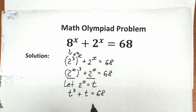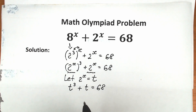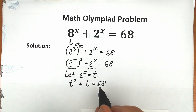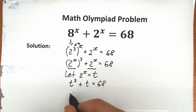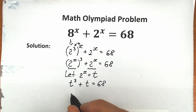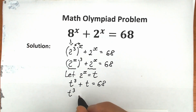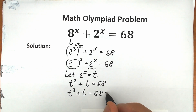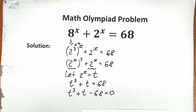If you look closely, this looks like a cubic equation. We can bring the constant from the right to the left, and as a result we have a classic cubic equation: t cubed plus t minus 68 equals 0.